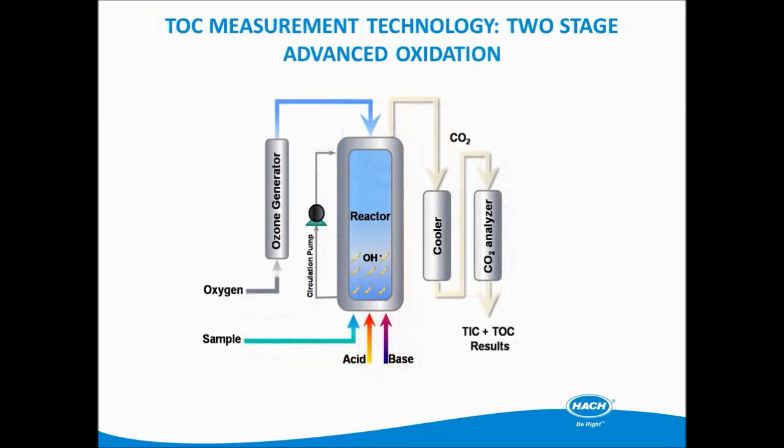This graphic shows the measurement path through a Hach BioTector analyzer that uses a two-stage advanced oxidation method. This method can handle very dirty samples, even samples with oils, and requires no sample filtration.